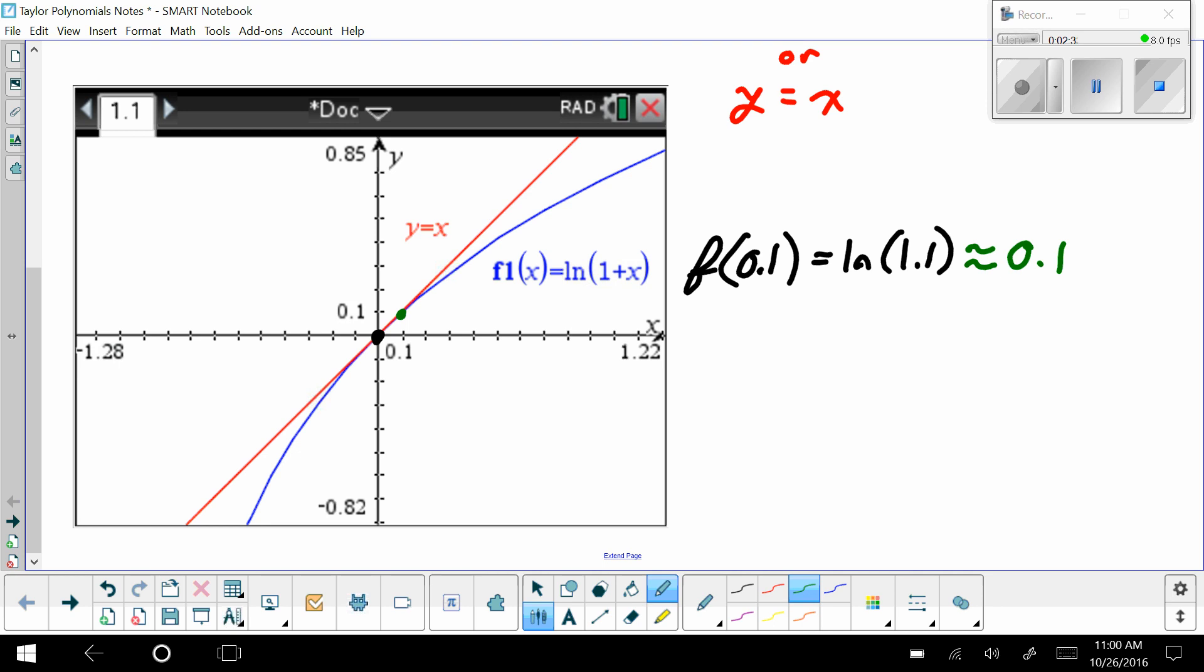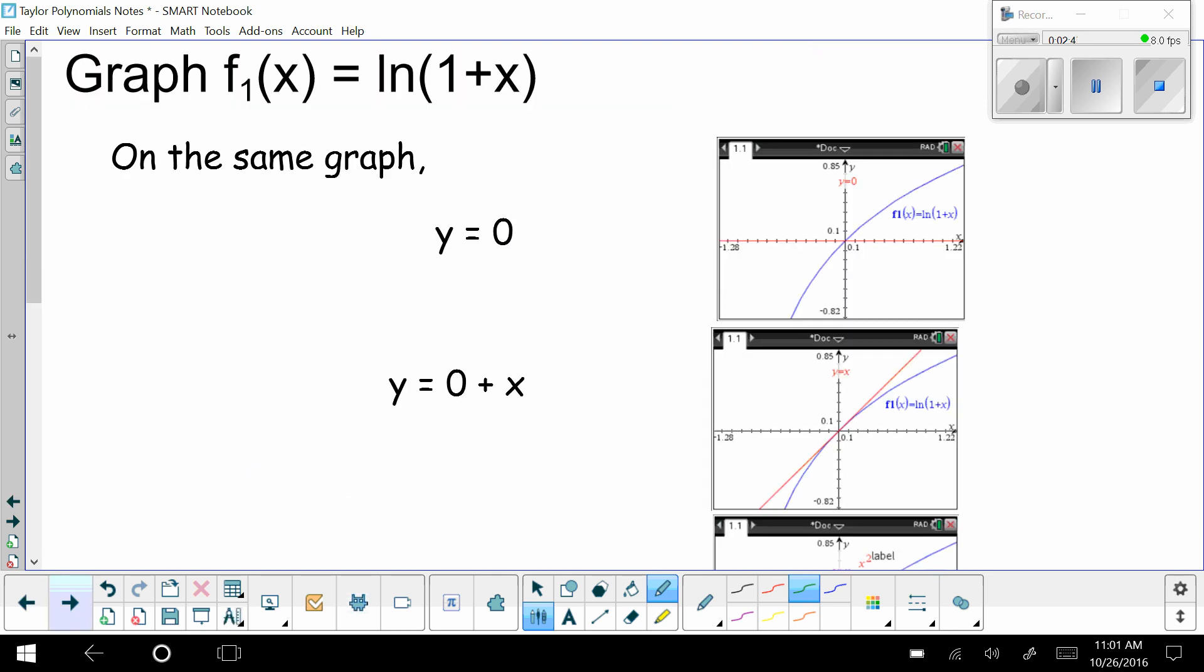So what we can do is instead of saying just a tangent line, we can start working with polynomials and try to get polynomials that can be used to estimate a function. So kind of working with that natural log of 1 plus x, we could use y equals 0, which is just a horizontal line through our point of tangency. That's not a very good estimate. It's really only close to the function at the point of tangency.